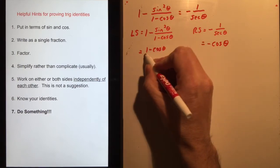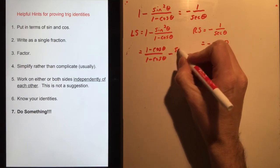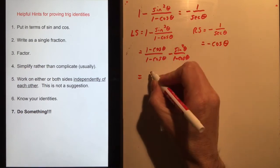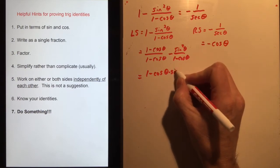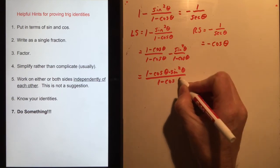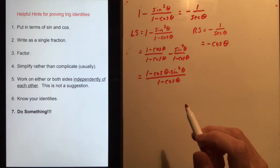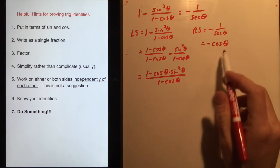Write as a single fraction — I need to get the denominators the same. So this becomes (1 - cosθ)/(1 - cosθ) times the existing fraction, giving (1 - cos²θ - sin²θ)/(1 - cosθ). Wait — it's (1 - sin²θ)/(1 - cosθ) combined: the numerator becomes 1 - cosθ - sin²θ over 1 - cosθ. It looks more complicated now, but writing as a single fraction is progress.